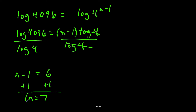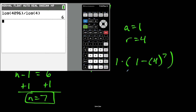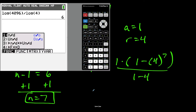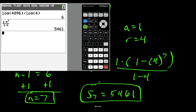So n equals 7, a equals 1, and r equals 4 — meaning we're finding the sum of the first 7 terms. Plugging into the formula, the sum of the first 7 terms equals 1 times 1 minus 4 to the 7th power, divided by 1 minus 4. Typing this into a calculator, this works out to 5,461.